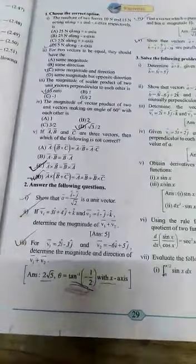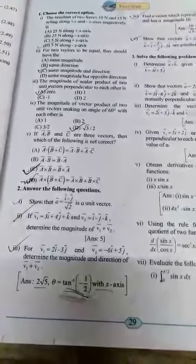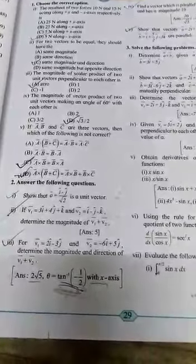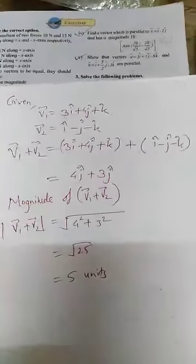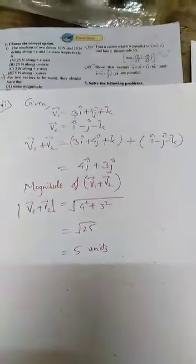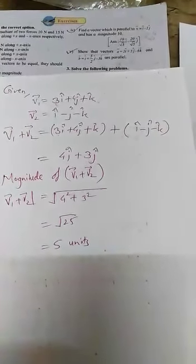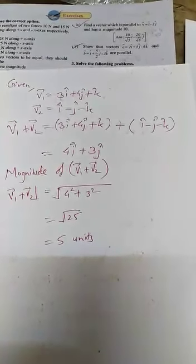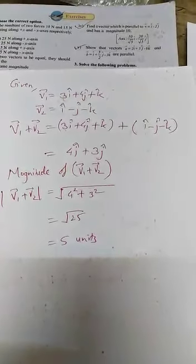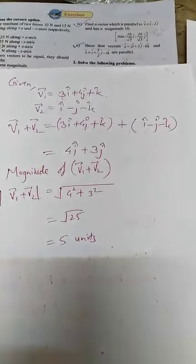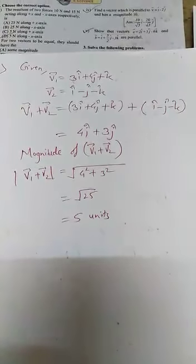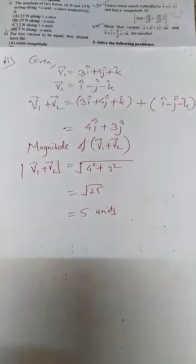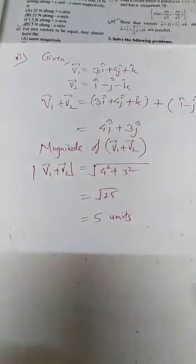Next question: v1 = 3i-cap + 4j-cap + k-cap and v2 = i-cap minus j-cap minus k-cap. Determine the magnitude of v1 plus v2. First calculate v1 + v2: (3i+4j+k) + (i-j-k) = 4i-cap + 3j-cap (the k terms cancel). The magnitude of v1 + v2 is square root of (4² + 3²) = root of 25 = 5 units.